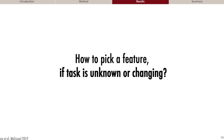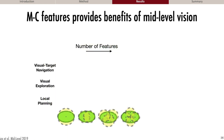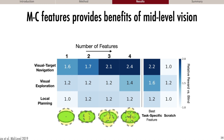But what do you do if the task is unknown or changing? In this case, we proposed that a set of features could be more general in terms of perception, and we proposed a specific example called the max coverage feature set, which we detail in the paper. We evaluated it for sets of size 1, 2, 3, and 4, and found that it essentially conferred the benefits of mid-level vision, performing comparably to the best task-specific feature and outperforming alternative approaches.